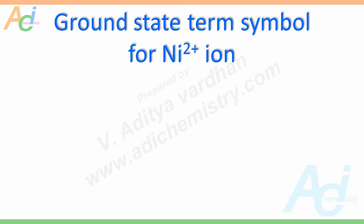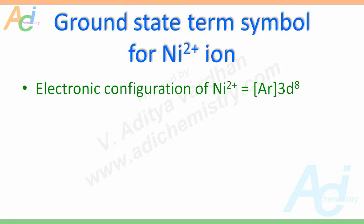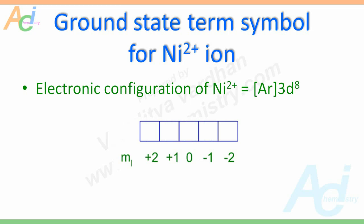Now one more example: the ground state term symbol for the Ni²⁺ ion, whose electronic configuration is [Ar] 3d⁸. Since the argon configuration represents all closed shells, we consider only 3d⁸. There are 5 d orbitals with ml values +2, +1, 0, −1, and −2. The first 5 electrons are arranged with all parallel spins according to Hund's rule, and the last three electrons pair up in the orbitals with the highest orbital angular momentum quantum numbers, without violating Pauli's exclusion principle.